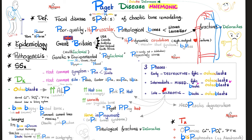The late stage is sclerotic and blastic — driven by osteoblasts alone — so alkaline phosphatase is very high. The skull bones harden and enlarge, increasing head size. This is one classic sign of Paget's disease, and the British hat used as a mnemonic cue fits nicely here.